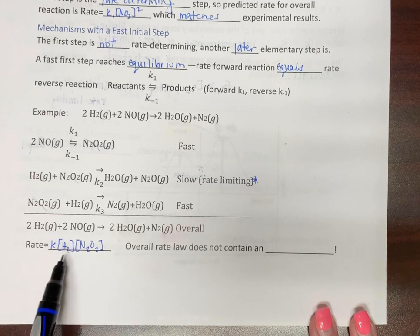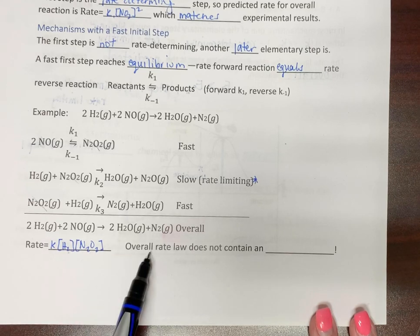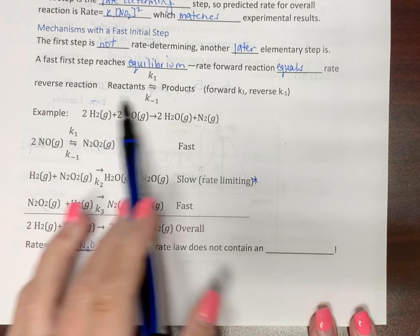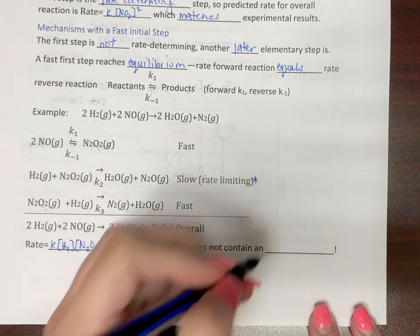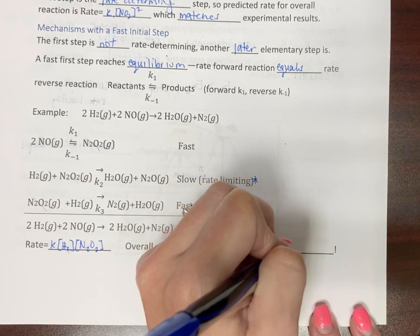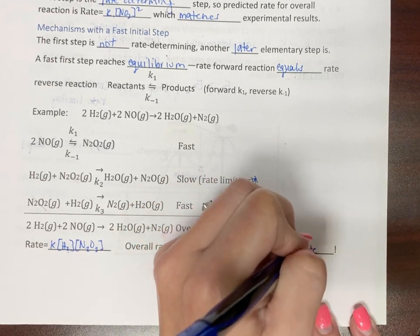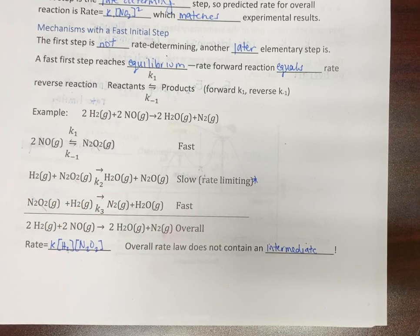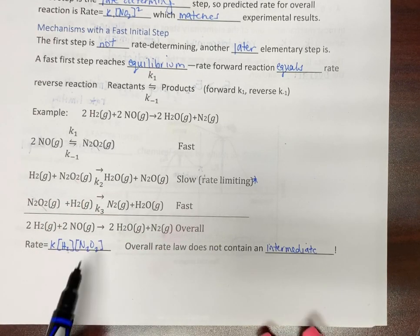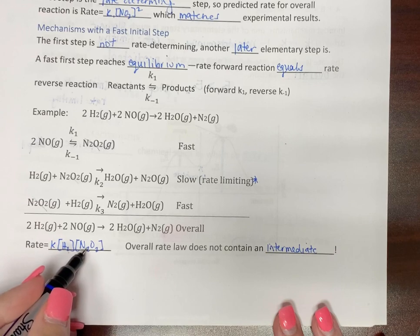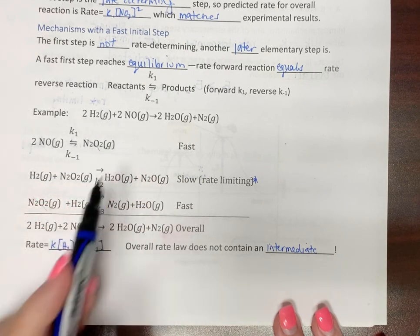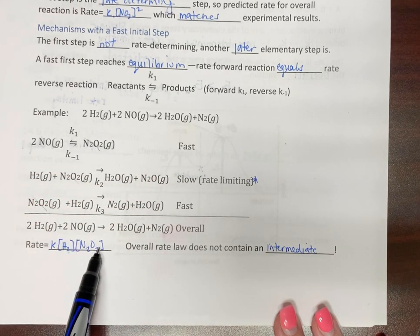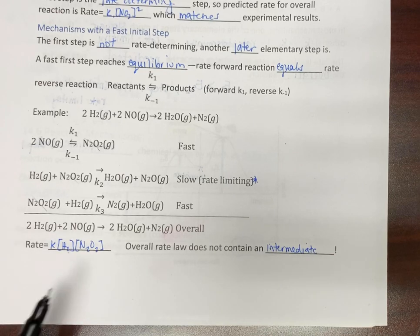Which means if you look at our reaction, our overall rate law here cannot contain an intermediate. So what in the world do we do here? So you can't have your rate law with something that's not in the reaction because you can't measure this concentration in the lab. So that's not going to work.